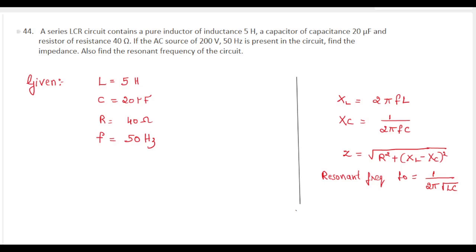So we have a pure inductor of inductance 5 henry, that is L equal to 5 henry. A capacitor of capacitance 20 microfarad, so C equal to 20 microfarad. A resistor of resistance 40 ohms, so R is 40 ohms, and frequency is 50 hertz.